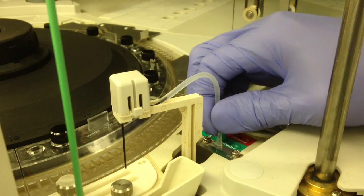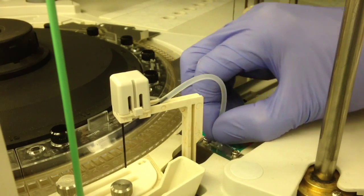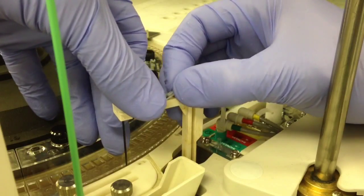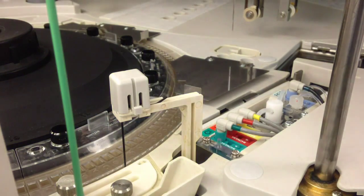We're going to be changing this tubing here on the sipper probe. Just be very careful when you're removing the tubing, especially from the actual probe itself. You don't want to bend anything.